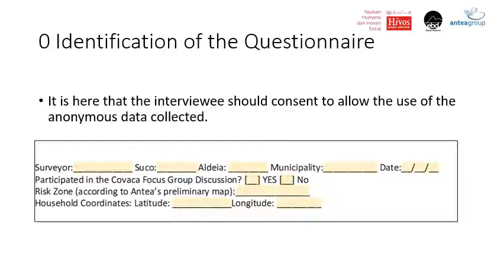It's very important that you, as a surveyor, identify yourself and not the person being surveyed — this is an anonymous data collection method. You will identify the suku, the aldeia, and the municipality. In form number three online, the selection of suku is from a drop-down menu according to municipality. The date is important. You also want to indicate if you identified this person through the focus group discussion, and if the person's house location is within the risk zone according to Antea's risk zone mapping.